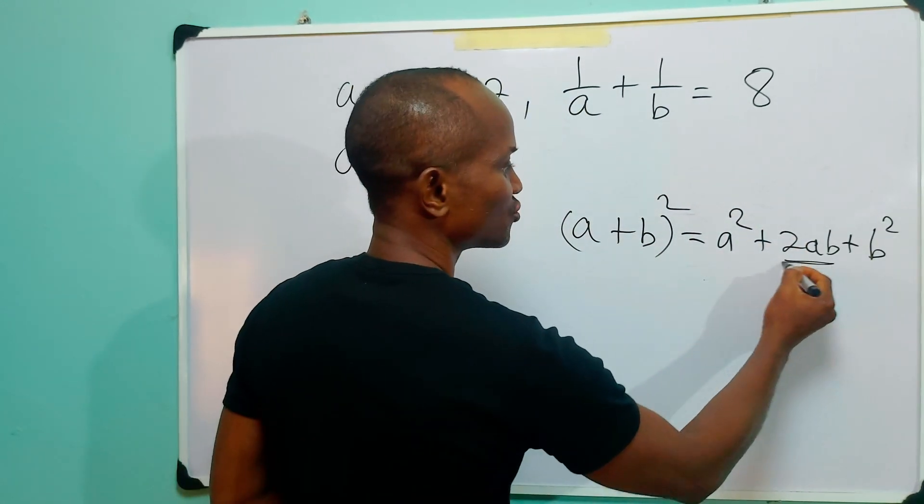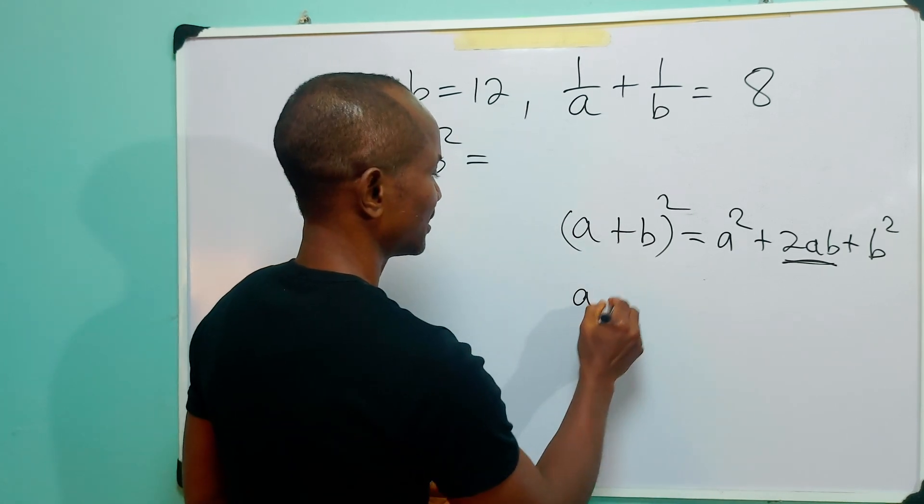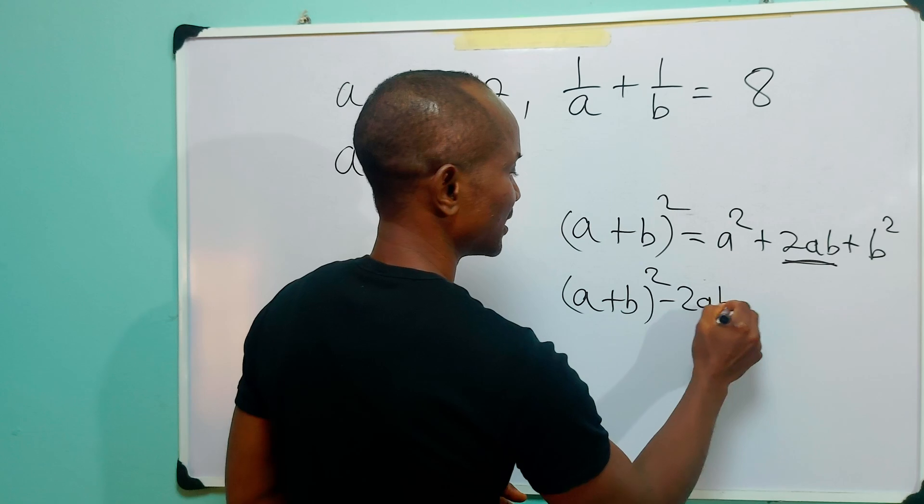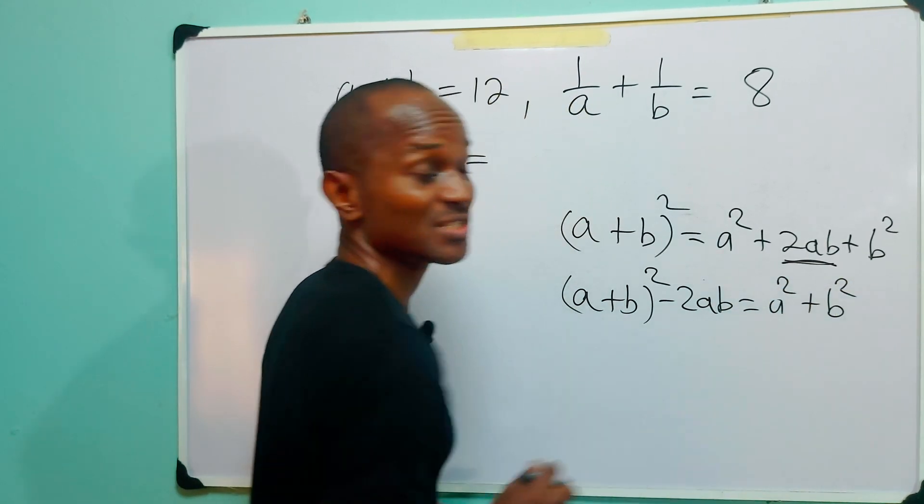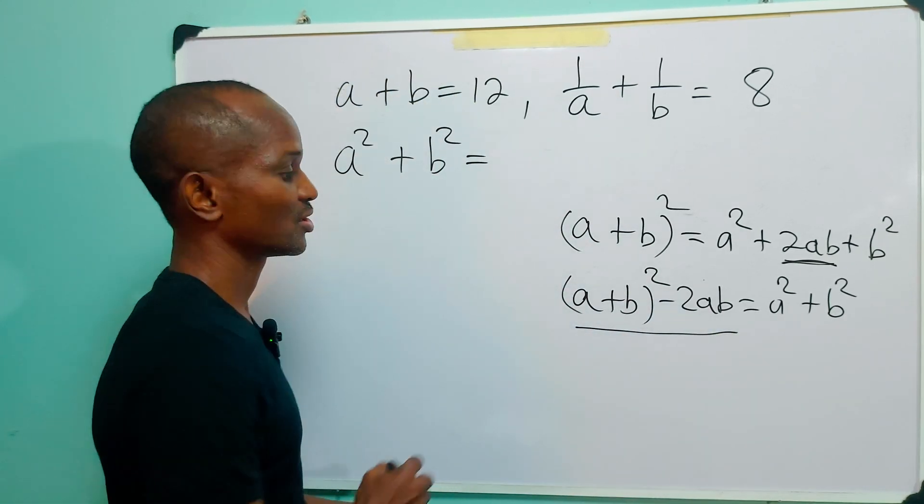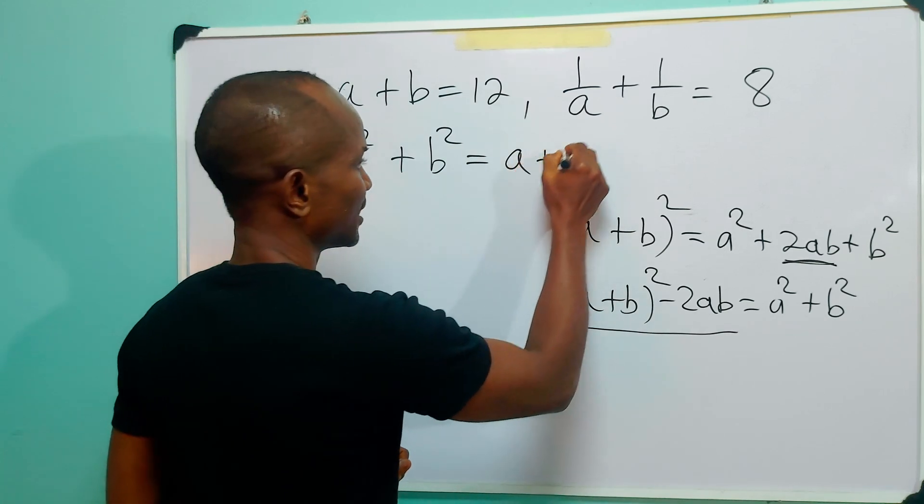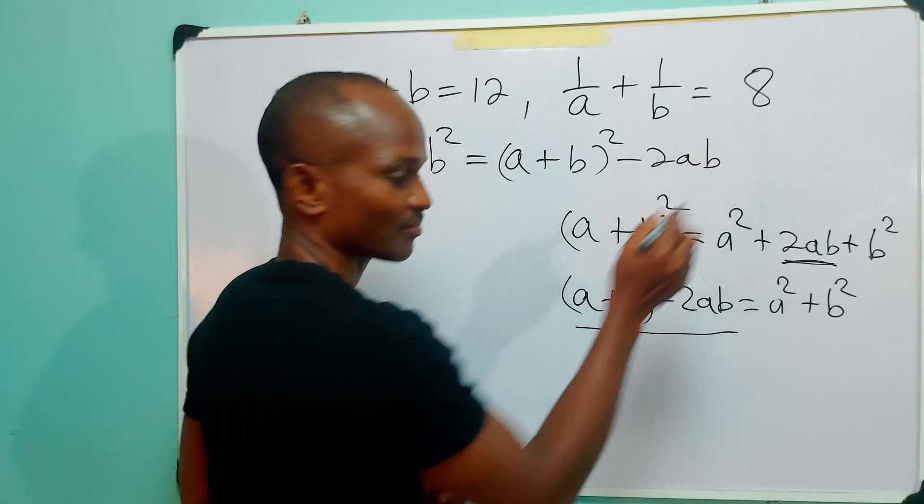Now if we subtract 2AB from both sides of this equation, we have that A plus B squared minus 2AB is equal to A squared plus B squared. So we can replace this with this expression. So we have that A squared plus B squared is equal to A plus B squared minus 2AB.